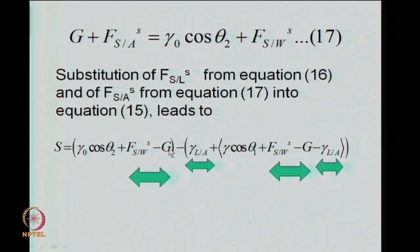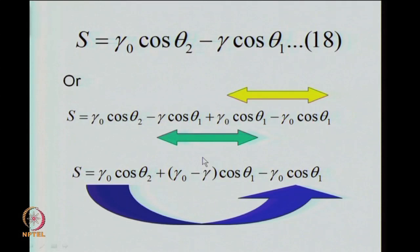What remains then is that F_SWS also cancels. We are left with gamma 0 cos theta 2 and gamma cos theta 1, while gamma_L also cancels out. So we are left with the equation S = gamma 0 cos theta 2 minus gamma cos theta 1. Remember, gamma 0 is the surface tension for pure water, and gamma is the surface tension for the monolayer-covered aqueous phase. Theta 1 is the contact angle in the two-liquid system, and theta 2 is the contact angle for a water drop placed on the solid directly.